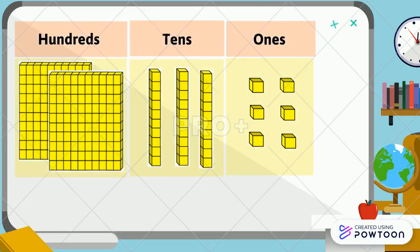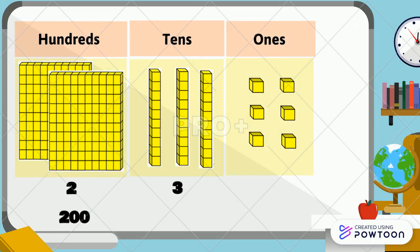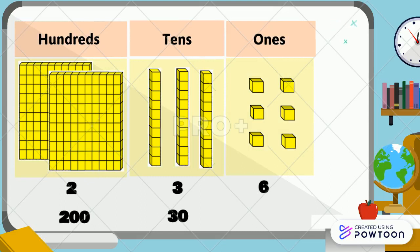Let's check it. The value of 2 hundreds is 200, 3 tens is 30, 6 ones is 6. So 200 plus 30 plus 6 is equal to 236.